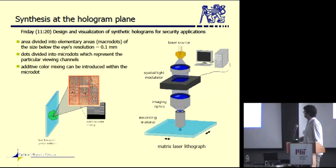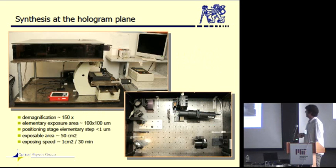This is the scheme how the device works. We use a 405 blue laser diode. We collimate it, then it's incident on a specialized modulator, where the structure, the image of the structure which should be recorded, is uploaded, and then it's demagnified on the recording material, which we use photoresist.